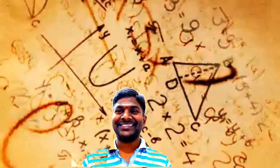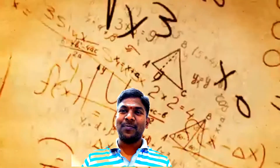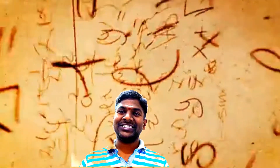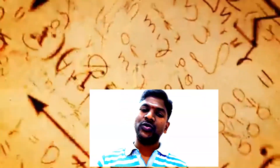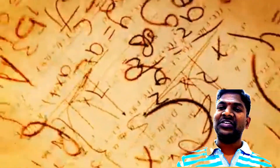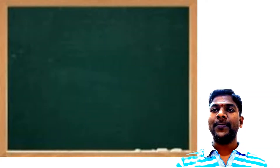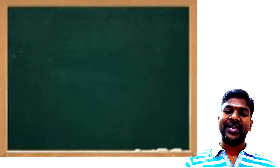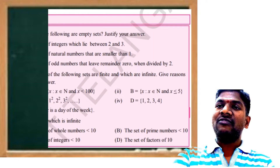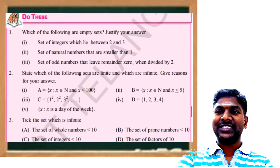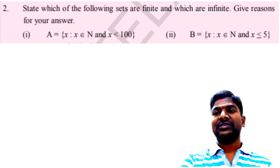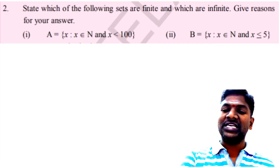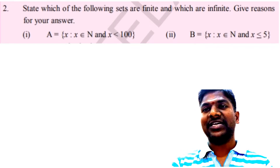Hi viewers and students. As part of our discussion in the chapter on Sets, today let us do this exercise which is before exercise 2.4. The question from 'Do This' states: which of the following sets are finite and which are infinite? Give reasons for your answer.